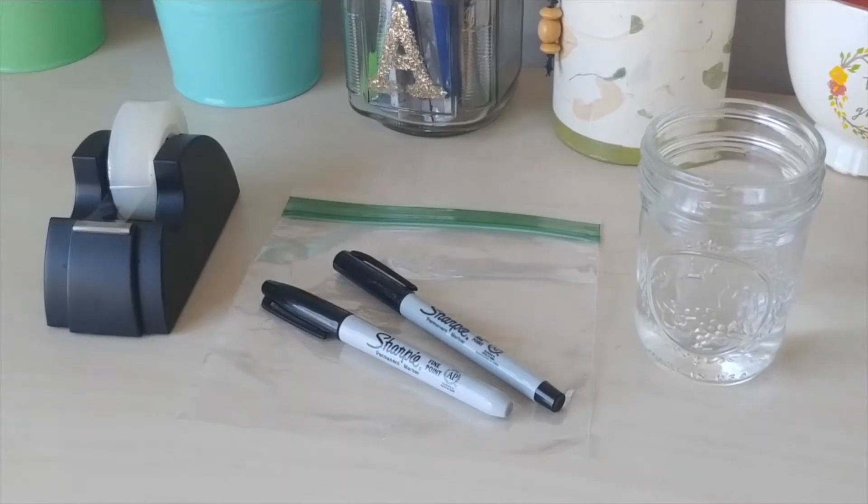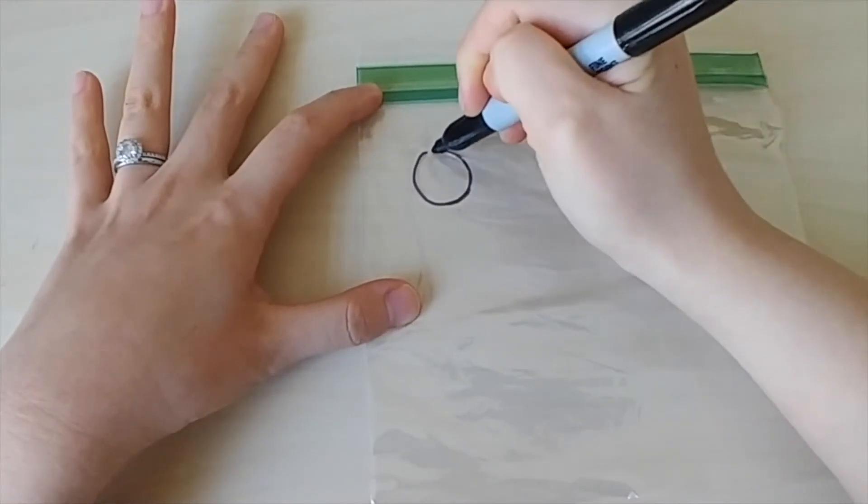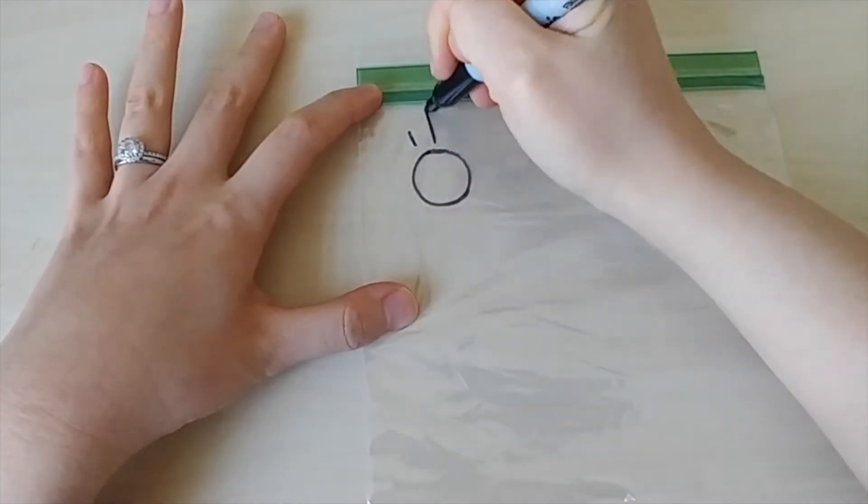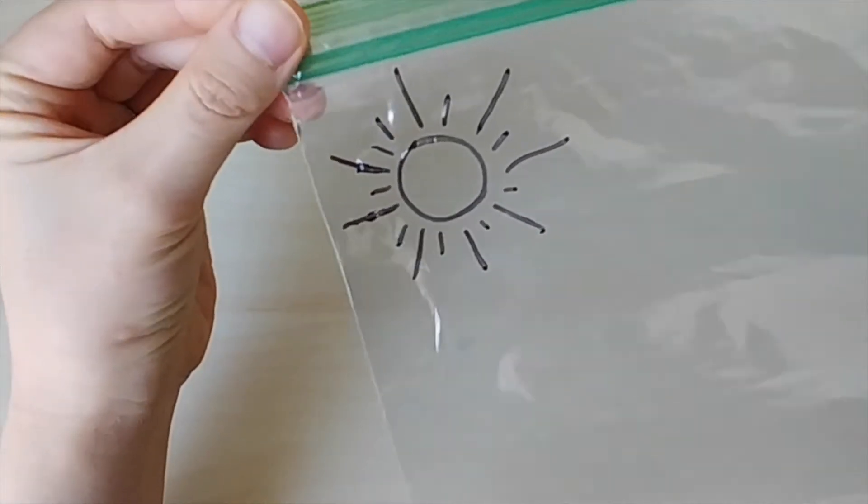Now that we have our materials, let's begin. First, draw a sun at the top left corner like this, alternating long and short lines around a circle.